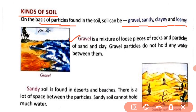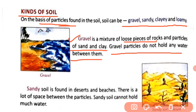First is gravel. Gravel is a mixture of loose pieces of rocks and particles of sand and clay. Gravel soil mein rocks ke loose pieces pae jaate hain aur is mein mix hoti hain clay and sand soil ke particles — toh ye ek tarah ka mixture hota hai.